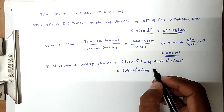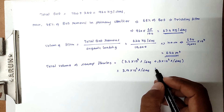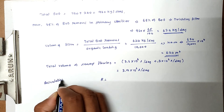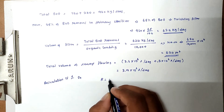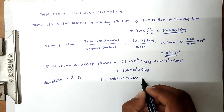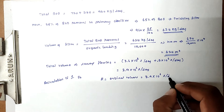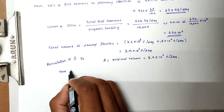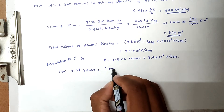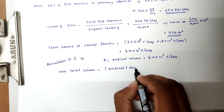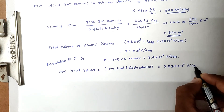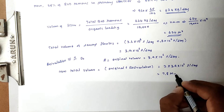The recirculation ratio R equals 1, meaning the recirculated volume equals the original volume of 3.9 × 10⁶ liters per day. So total volume equals original plus recirculation: 2 × 3.9 × 10⁶ = 7.8 million liters per day.